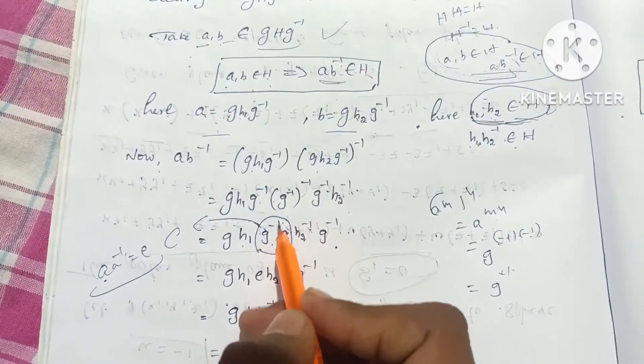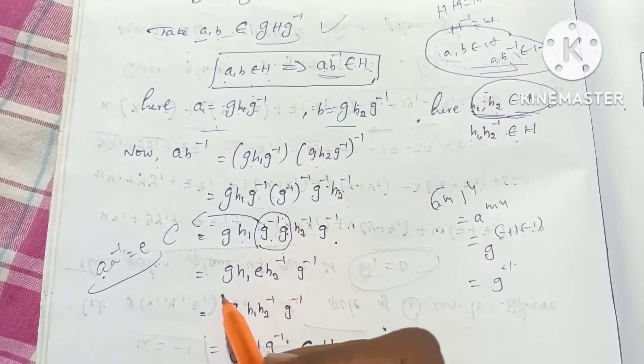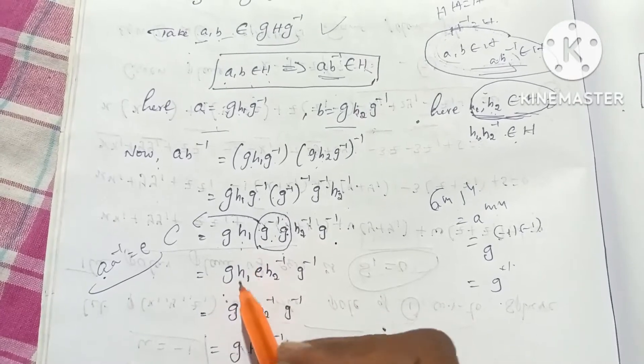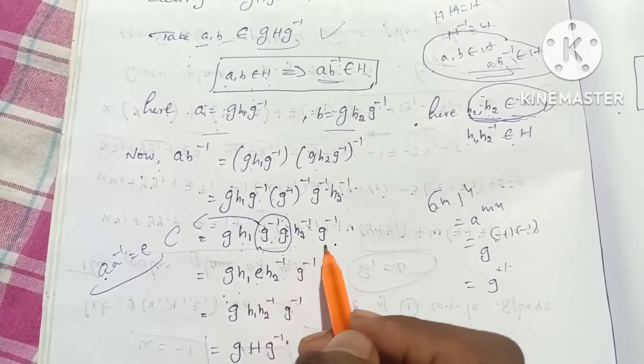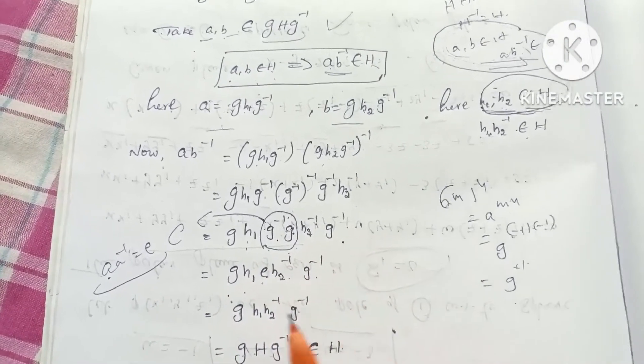G into G⁻¹ is equal to E, the identity element. So we get g·H₁·E·H₂⁻¹ into g⁻¹.